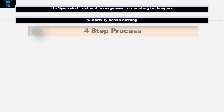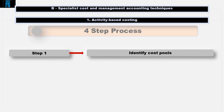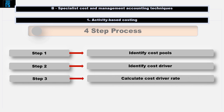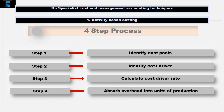There are four main steps involved in calculating the overhead cost per unit under activity based costing. Step 1: separate the overheads into cost pools. Step 2: identify the cost driver for each cost pool. Step 3: calculate the overhead absorption rate for each cost driver. Step 4: use the overhead absorption rate to absorb costs from each cost pool into the units of production. This calculates the overhead cost per unit.